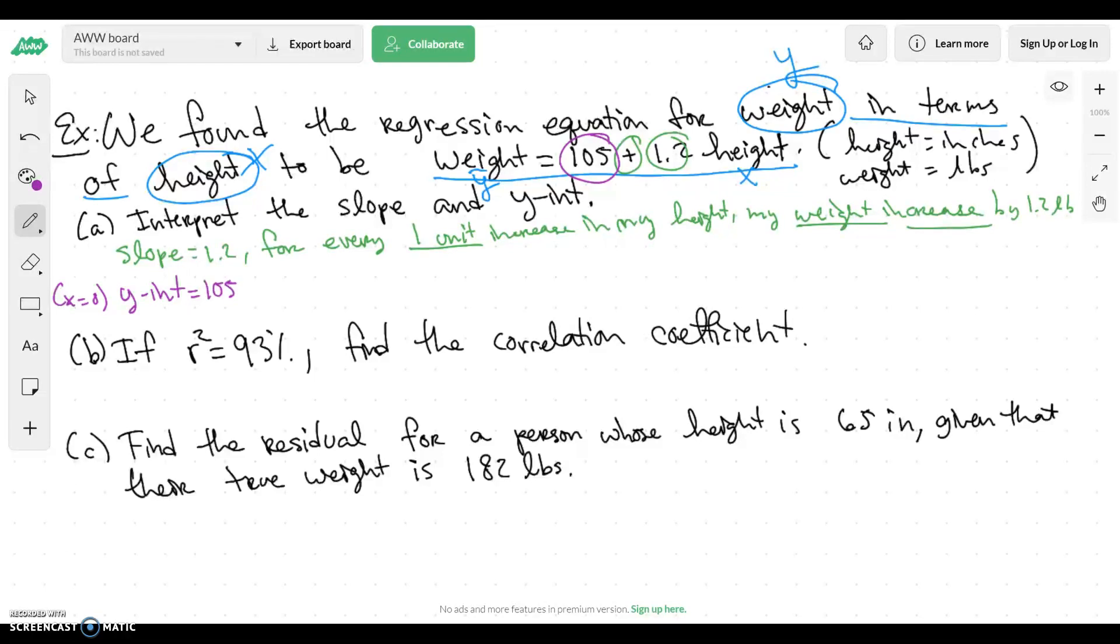Okay, and that's 105. So when x is zero and the x in this case is my height, so when my height is zero inches, my weight is 105 pounds, which makes absolutely no sense.